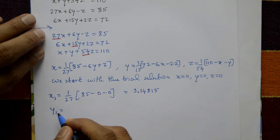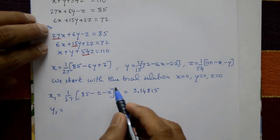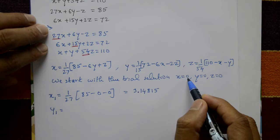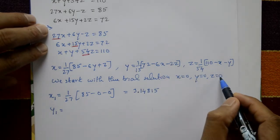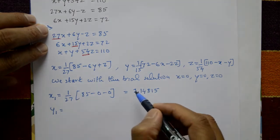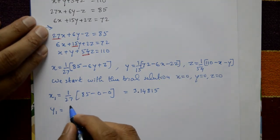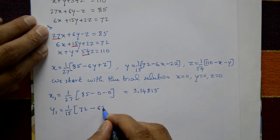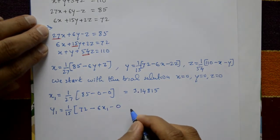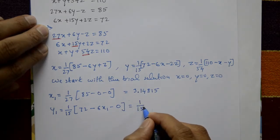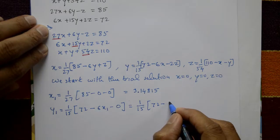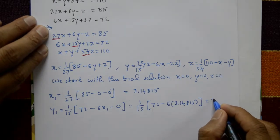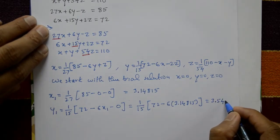Next, calculate y1. Put z = 0 and immediately substitute the updated x1 value: y1 = (1/15)(72 − 6·x1 − 2·0) = (1/15)(72 − 6 × 3.14815) = 3.54074.